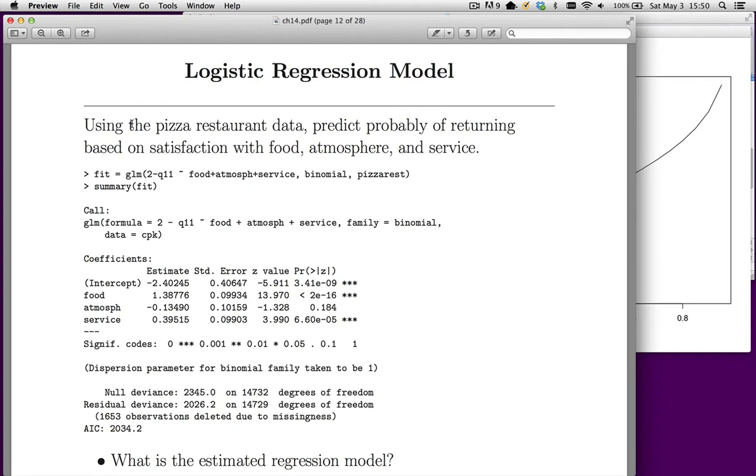The other three variables measured were satisfaction levels with food, atmosphere, and service. These were all measured on five-point scales where five means very satisfied, one means very dissatisfied, and you can fill in the values in between.